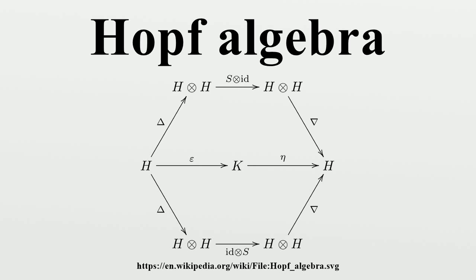For example, a finite groupoid algebra is a weak Hopf algebra. In particular, the groupoid algebra on N with one pair of invertible arrows e_{ij} between i and j in N is isomorphic to the algebra H of N×N matrices. The weak Hopf algebra structure on this H is given by coproduct delta(e_{ij}) = e_{ij}⊗e_{ij}, counit epsilon(e_{ij}) = 1 and antipode S(e_{ij}) = e_{ji}. The separable subalgebras H_L and H_R coincide in a non-central commutative algebra in this particular case. Early theoretical contributions to weak Hopf algebras are to be found in the literature, as well as Hopf algebroids.